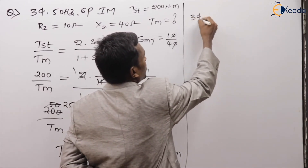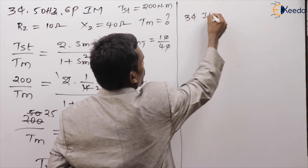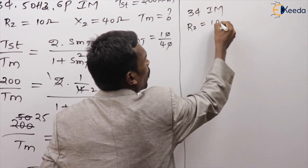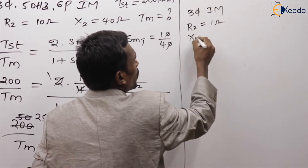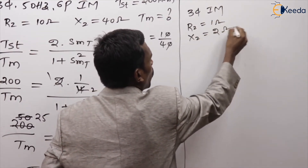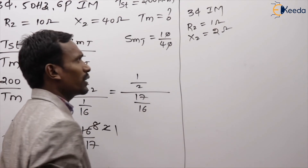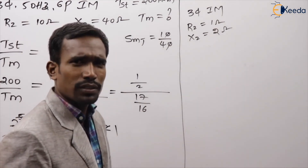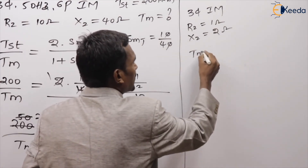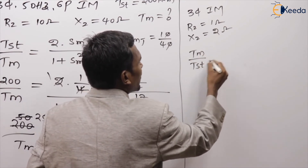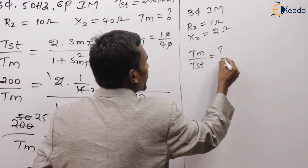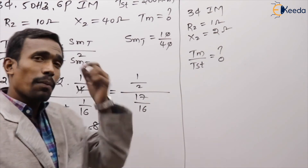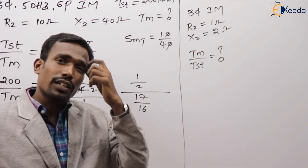Another question: a three-phase induction machine, rotor resistance 1 ohm, rotor reactance 2 ohms. Find the maximum torque to starting torque ratio.